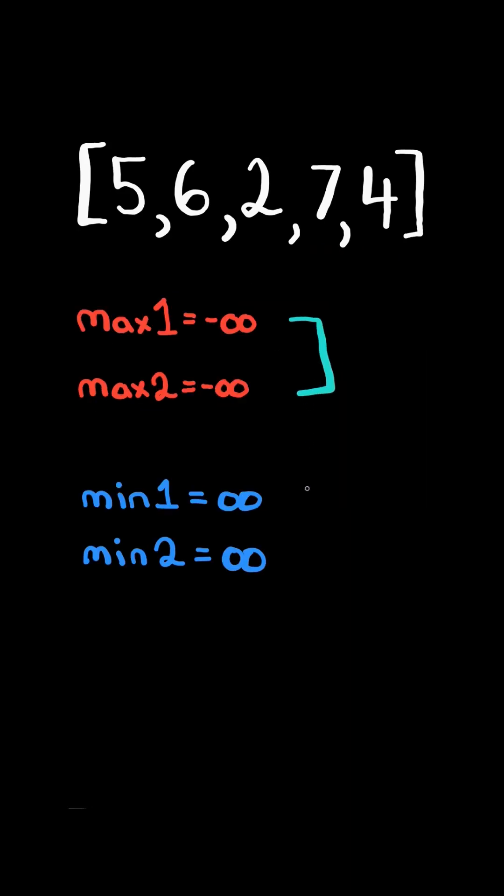First, we can keep track of two of the largest and smallest numbers. Then iterate through the list and update max1 to the greater of itself or the number, and update min1 to the smaller of itself or the number.